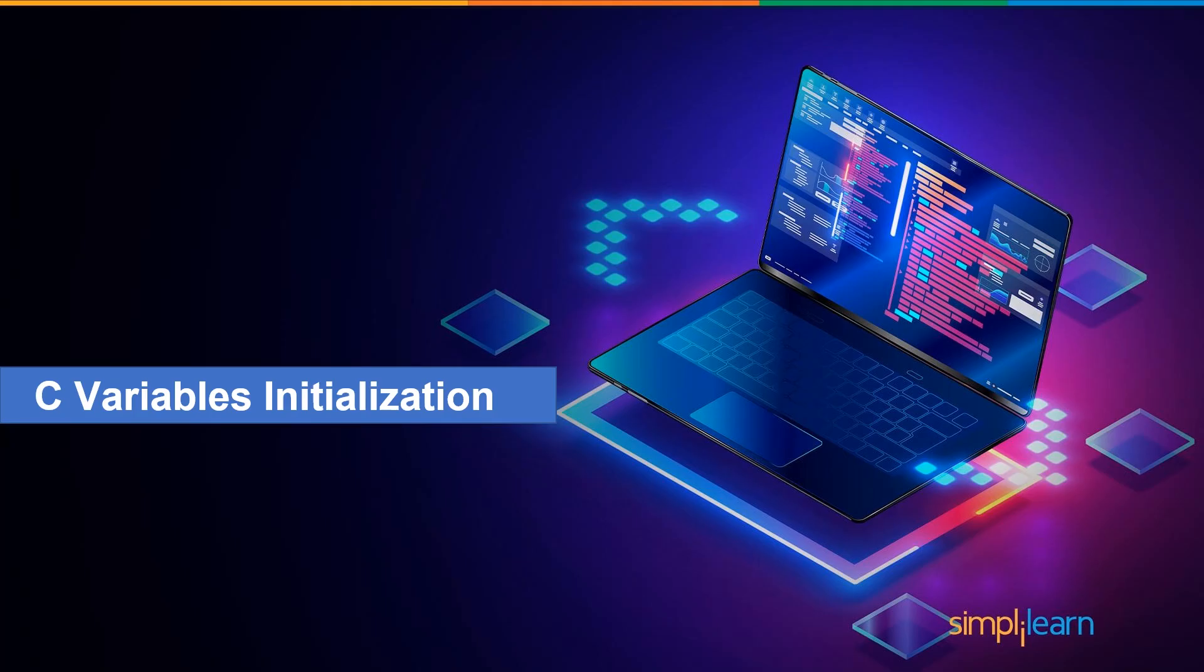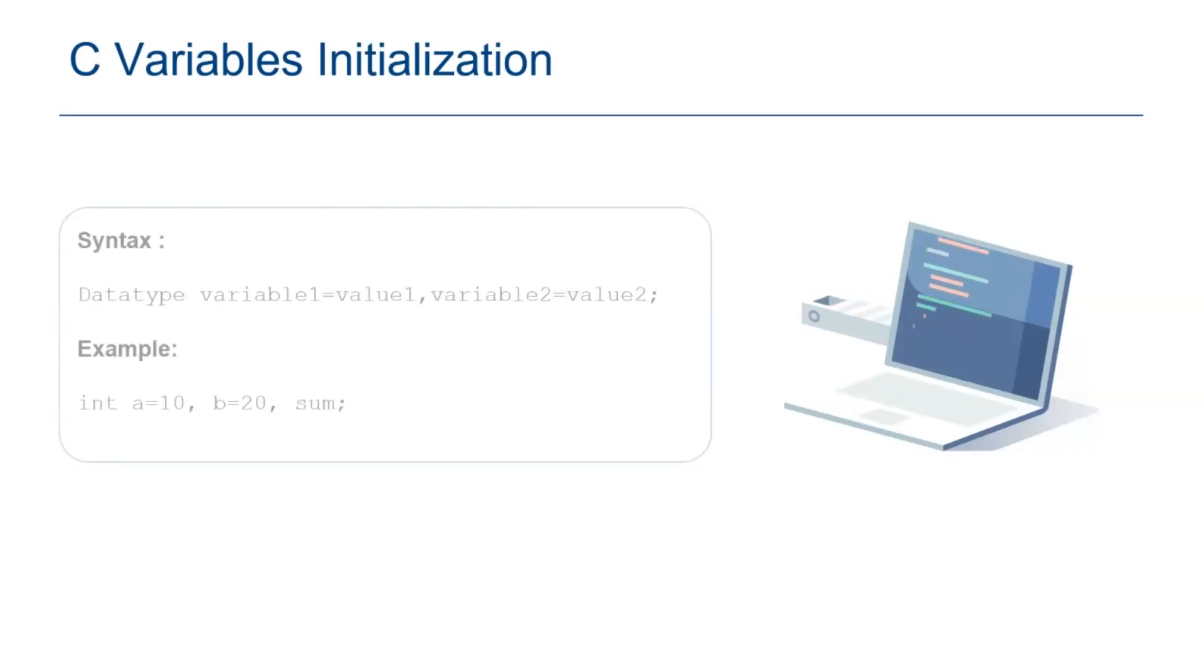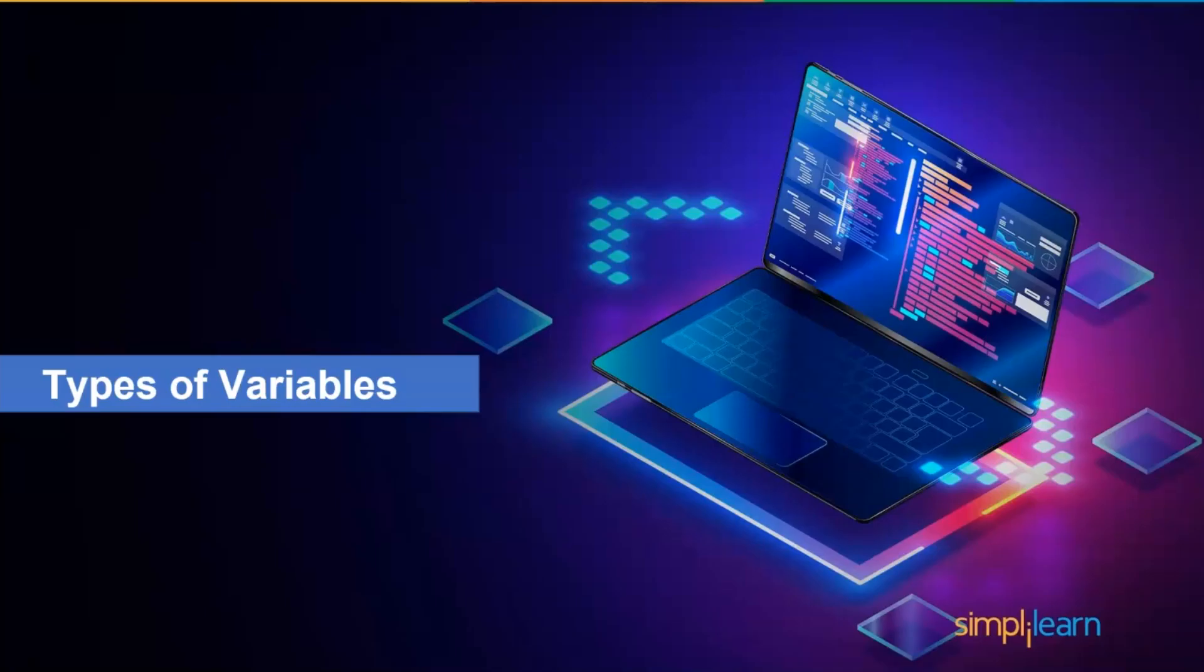Now that we know how to declare a C variable, let's move ahead and understand C variable initialization with the help of syntax and examples. Syntax of variable initialization is data type, variable 1 equals value 1, comma, variable 2 equals value 2, and semicolon. For example, int a equals 10, comma b equals 20, comma sum. 10 is assigned to variable a here of type integer, value 20 is assigned to variable b of the same type, and we have declared a variable sum.